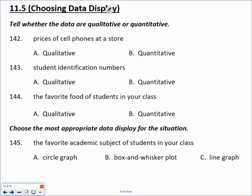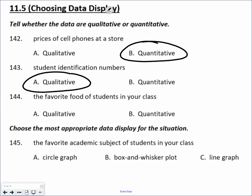Prices of cell phones — qualitative versus quantitative. Qualitative data is data for which you would not take the average. Quantitative data is data that you would take the average. Prices of cell phones at a store — you could find the average price, so B is the correct answer. Identification numbers would be qualitative data. The favorite food of students in your class is again qualitative data. The favorite academic subject of students in your class — you could do that as percentages, not something over time, so you're talking about a circle graph.